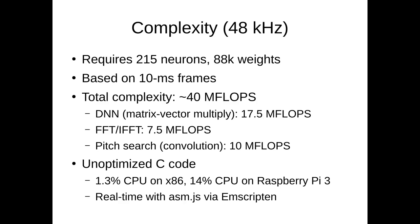The most complex parts are first the DNN, which is mostly made of matrix-vector products, and the complexity of that is around 17.5 megaflops. We have FFTs and IFFTs, and those cost around 7.5 megaflops. Then we have a pitch search, which uses a correlation or convolution and costs around 10 megaflops. So these are the main parts.